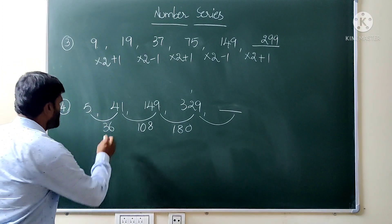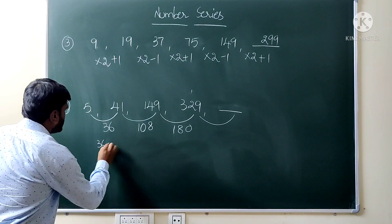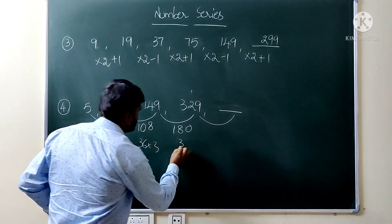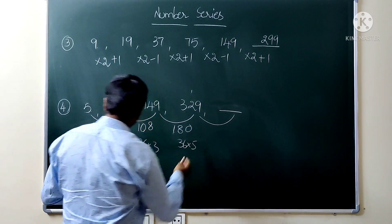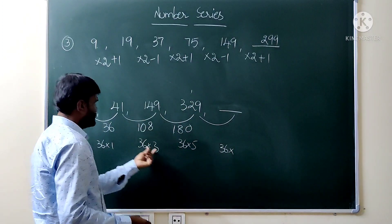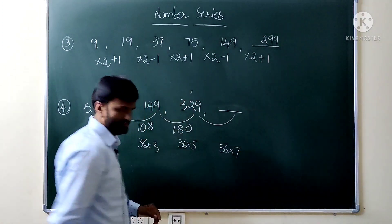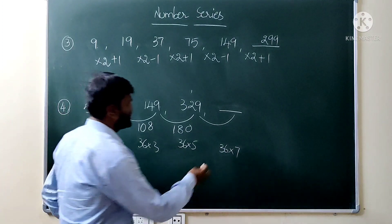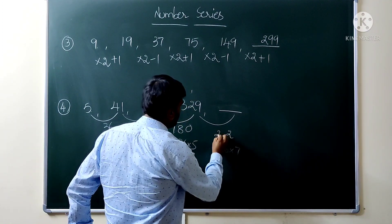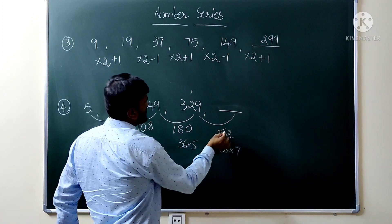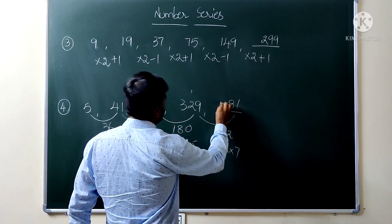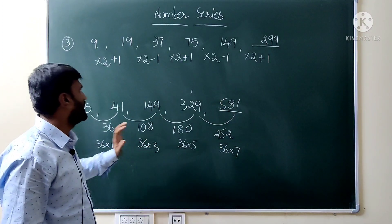The multipliers are 36 times 3, 36 times 5 — so 1, 3, 5, next is 7, sticking to odd numbers. So 7 times 6 is 42, 7 times 3 is 21, giving the required answer as 591.